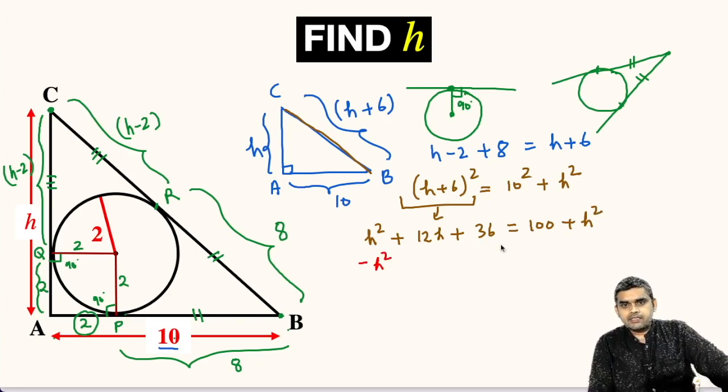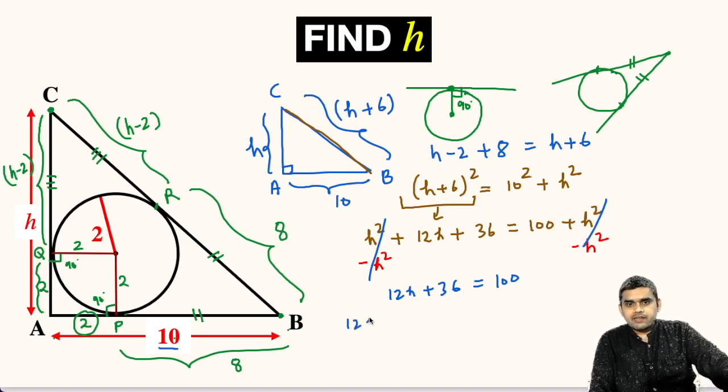Let us subtract H square from both sides. This will be 12H plus 36 equals 100 because H square will get cancelled from both sides. So, we can write 12H equals 100 minus 36 which is equal to 64.